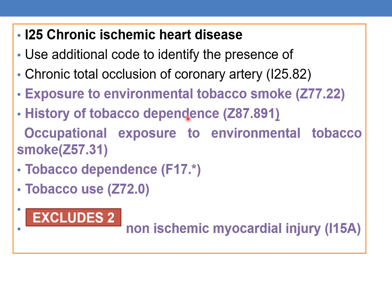Additional codes for I25 also include: occupational exposure to environmental tobacco smoke Z57.31, tobacco dependence from category F17, and tobacco use Z72.0. The I25 category also has an Excludes 2 note, meaning non-ischemic myocardial injury (I5.8) can be coded together with I25 series, as Excludes 2 means they are not related but can be coded together.